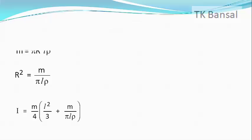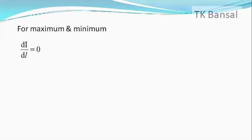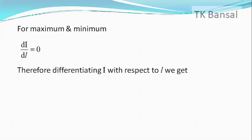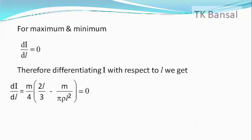For minimum moment of inertia, dI/dL should be equal to 0. Therefore, differentiating I with respect to L, we get dI/dL = (M/4) × [2L/3 − M/(π ρ L²)] = 0. This gives 2L/3 = M/(π ρ L²).